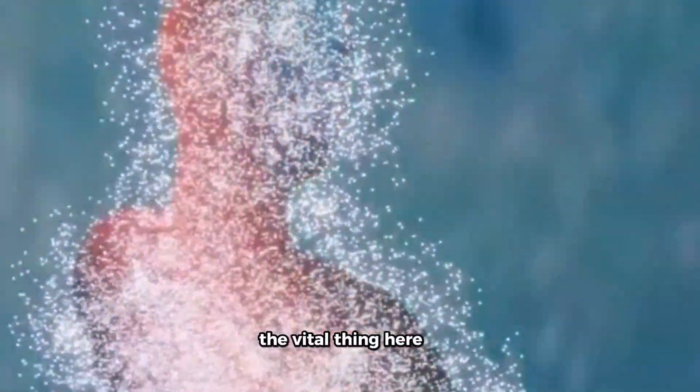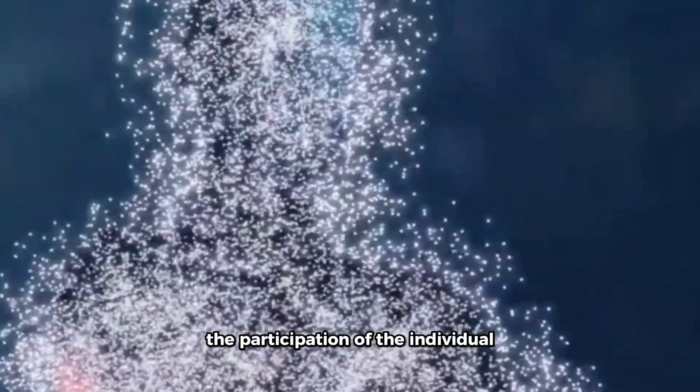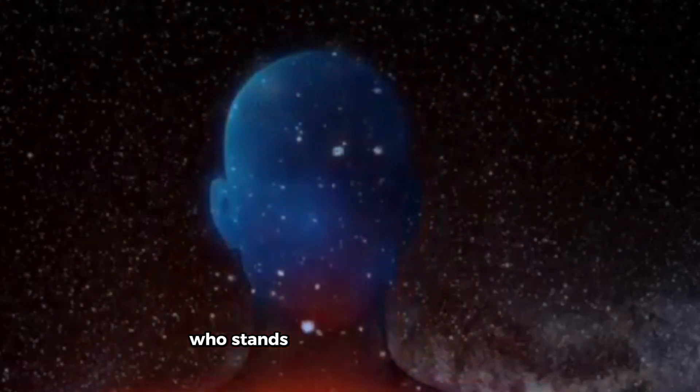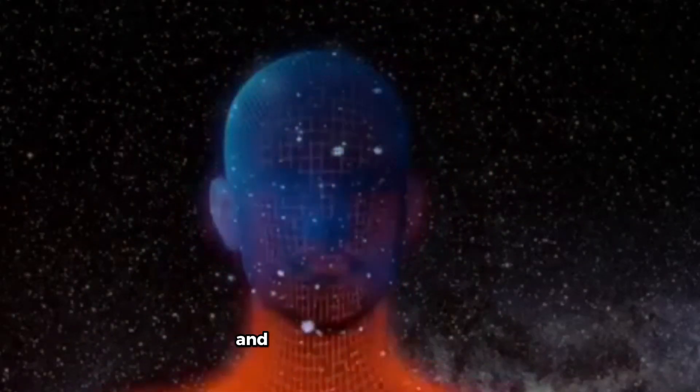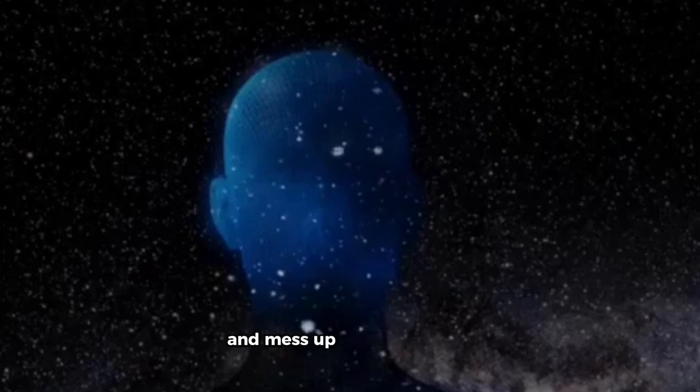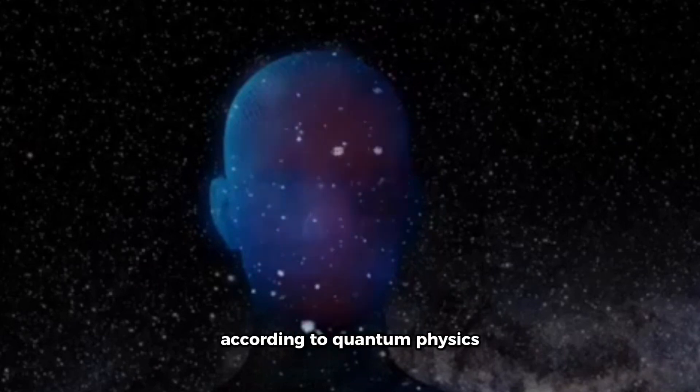The vital thing here is the participation of the individual. Classical theory asserted that the observer is the one who stands safely behind a glass wall and watches what goes on without participating in anything since it was thought that the observer's views would interfere and mess up the experiment. This is impossible according to quantum physics.